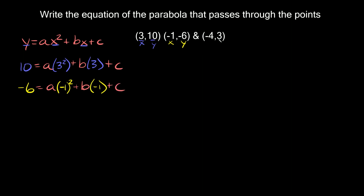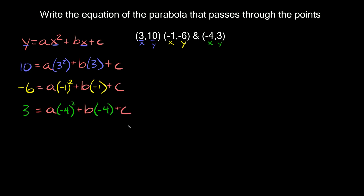Lastly we have (-4, 3), so we plug in 3 for y and -4 for x: 3 = a(-4)² + b(-4) + c.